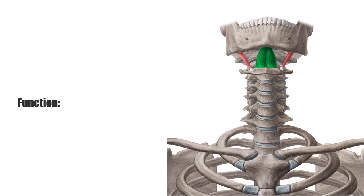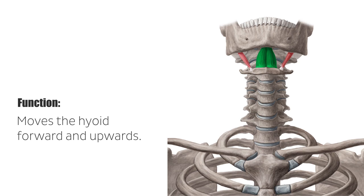The geniohyoid moves the hyoid forward and upwards and supports the opening and lateral movement of the mandible. Due to their contribution during mastication, the suprahyoid muscles are also referred to as accessory muscles of mastication.